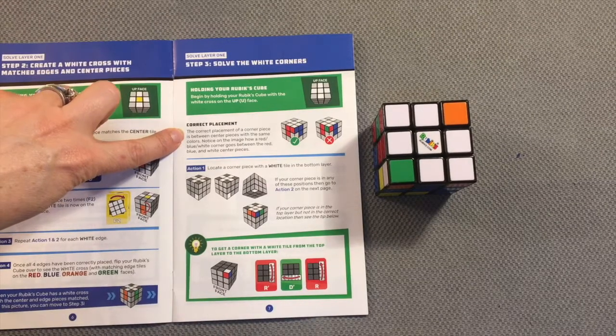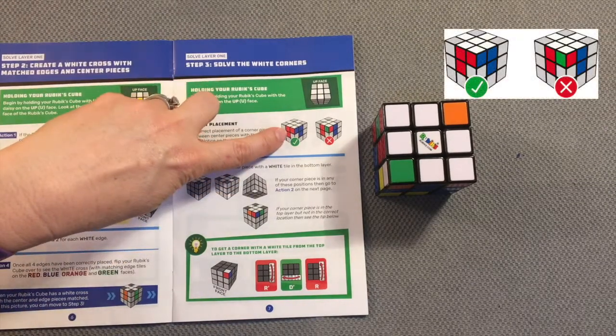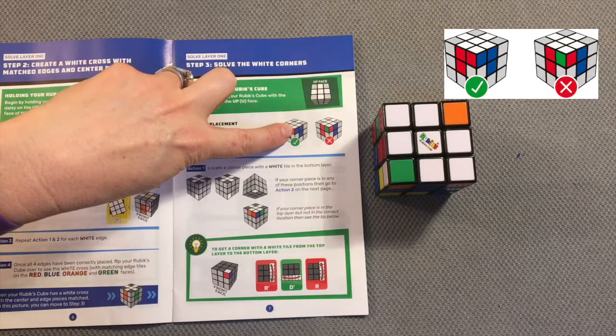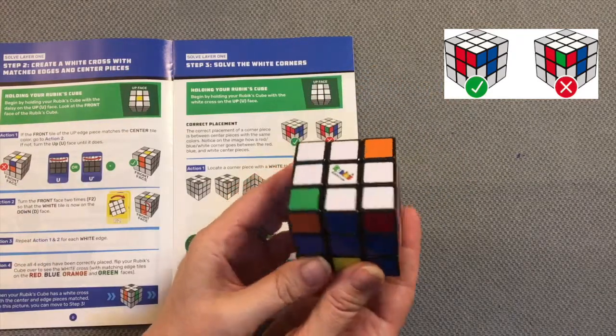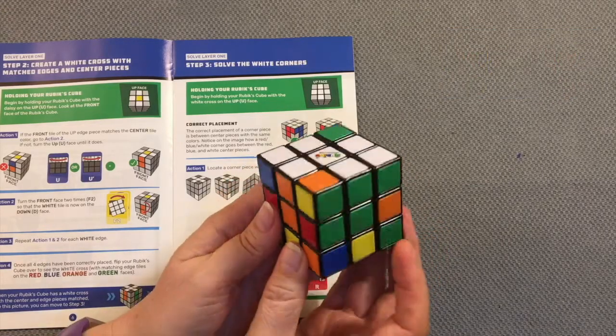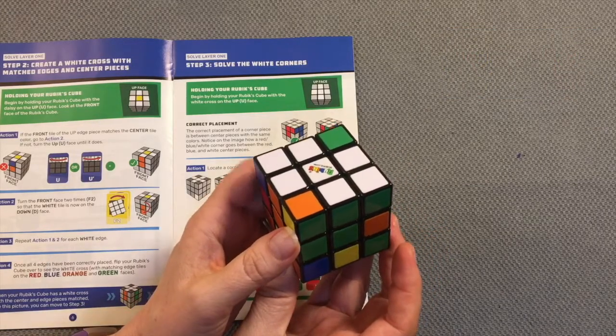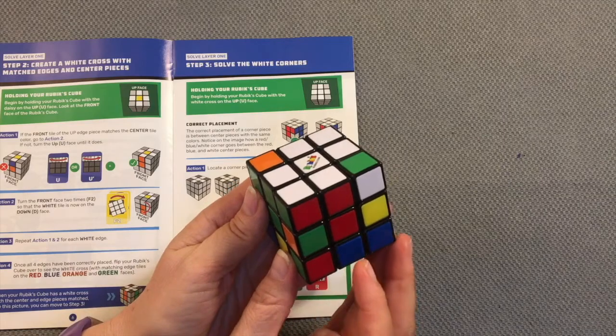The correct placement of a corner piece is based on its orientation with the center piece. So notice here the red center has the red corner, the blue center has the blue corner. As I look at my cube, none of my corner pieces... well, here's one.